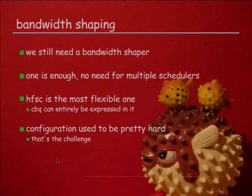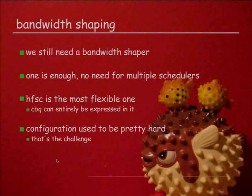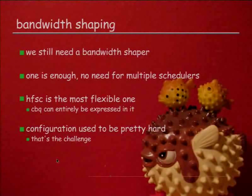That covers priority queuing, but we still need a bandwidth shaper, and unfortunately that is harder. One thing is clear: we only need one — there is no point in having multiple. HFSC is the most flexible one, also the one that used to be the hardest to use. CBQ can entirely be expressed in HFSC, so there really is no point in having a separate CBQ scheduler. The configuration is the challenge, because it was way too hard. HFSC setups are rarely seen apparently because it's too hard to use, while CBQ is being used a lot. But HFSC is the better scheduler in many ways.